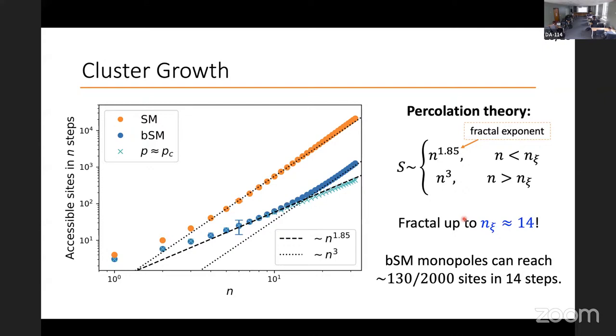To quantify this, we can look at how these clusters grow. The way we do that is we ask how many sites are accessible within n steps, and then we average that over a lot of different configurations in our simulations. In the SM case, this grows as one would expect. For a very small n, it's a bit different. And then it just follows this n to the 3 line. This is just typical dense growth. But in the BSM case, we see something very different. It grows slowly up to some crossover scale that we estimate to be about 14, which gives us an idea for our correlation length in the system. And then it turns over and grows with this conventional n to the 3. This previous slower growth here actually seems to match the prediction from percolation theory quite well. The fractal exponent should be 1.85. So that seems to match pretty well.